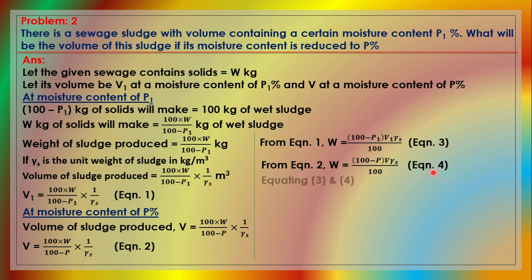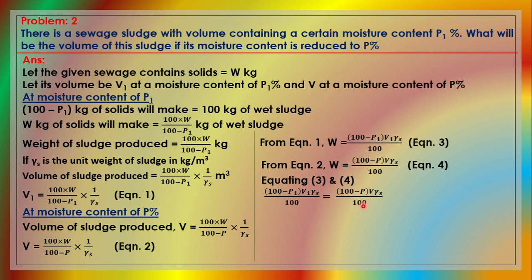Equating equation 3 and equation 4, since both equal W: (100 − P1) × V1 × γₛ / 100 = (100 − P) × V × γₛ / 100. Simplifying, the general equation becomes: V = V1 × (100 − P1) / (100 − P). When the moisture content is reduced from P1 to P, the reduced volume V equals V1 × (100 − P1) / (100 − P).